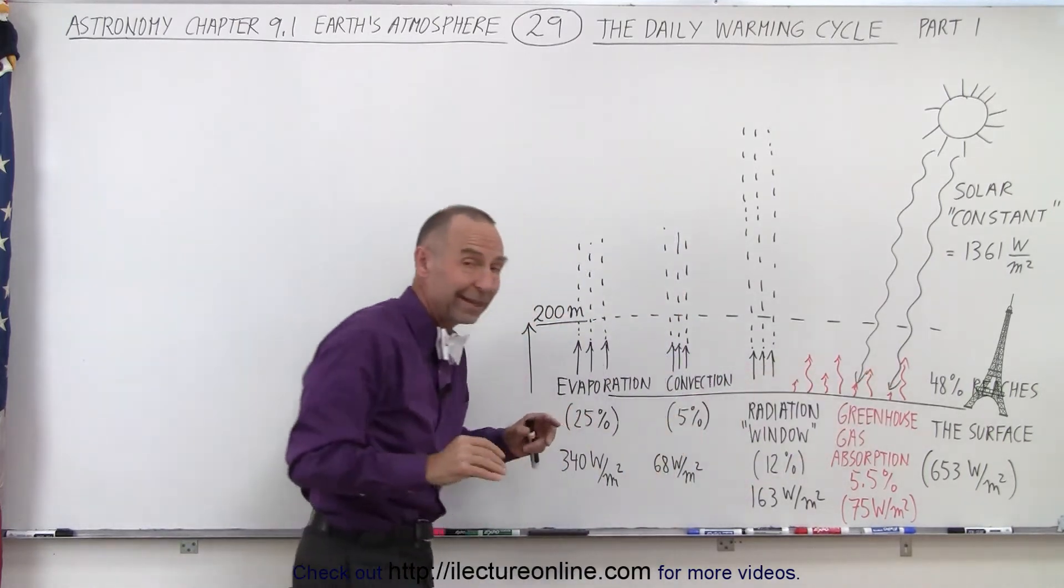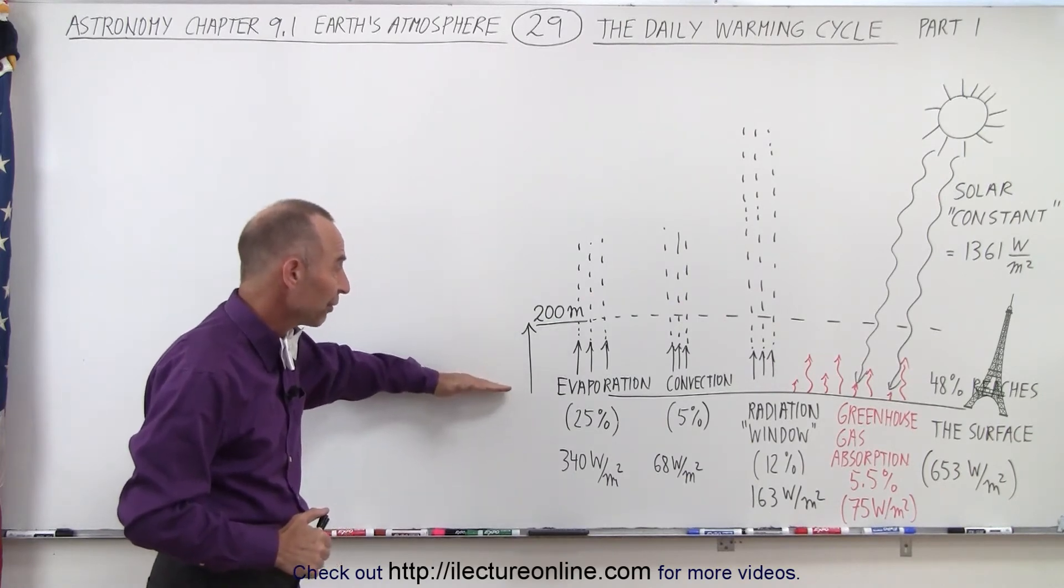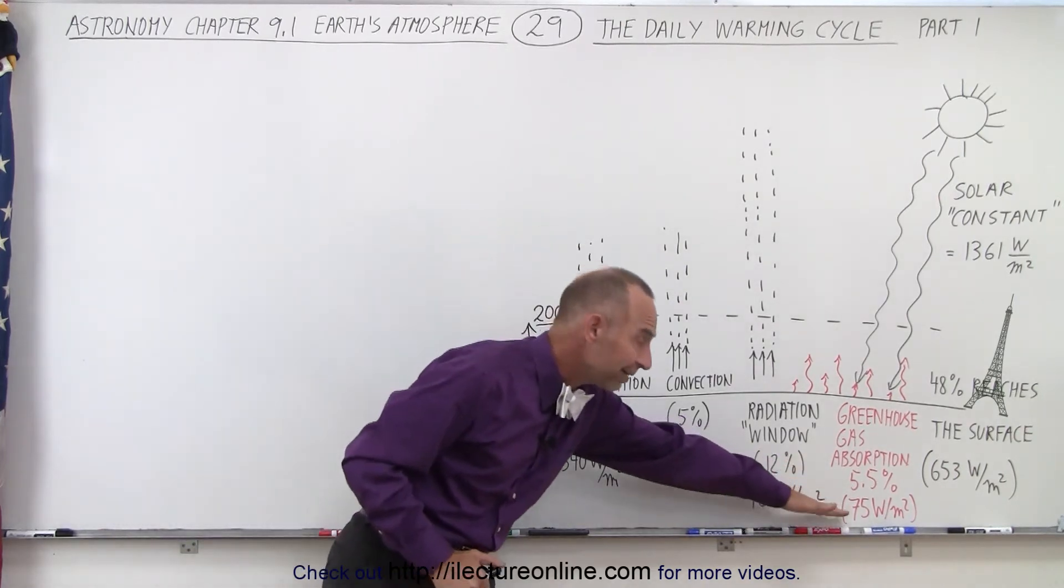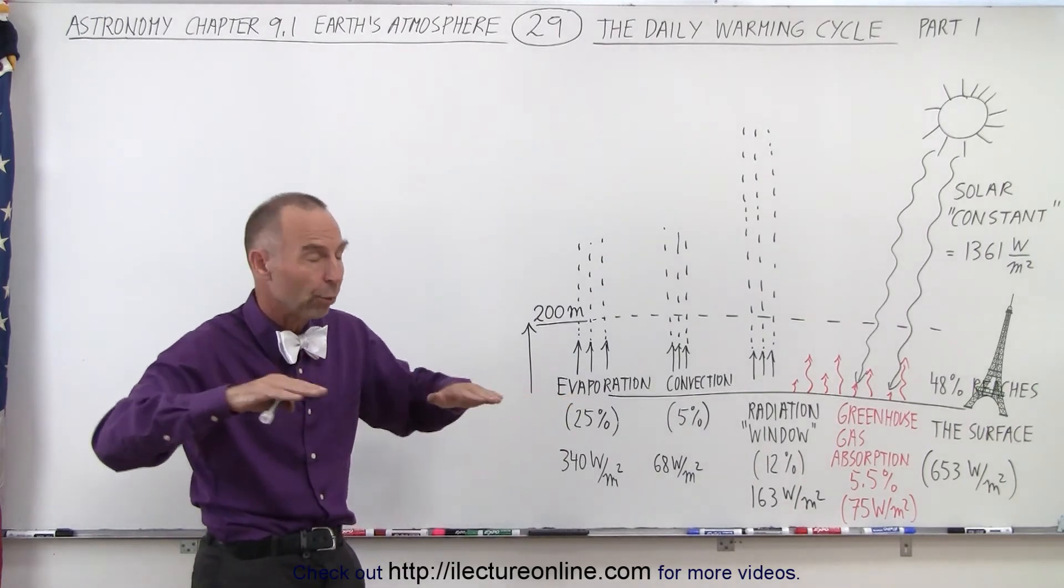Or we should maybe more correctly say, the lower atmosphere. In the first 200 meters of atmosphere from the surface, almost all of that 75 watts per square meter is actually absorbed, and that's what keeps the Earth nice and warm. That's what gives us a comfortable temperature.